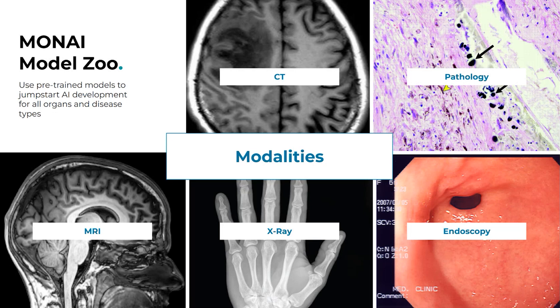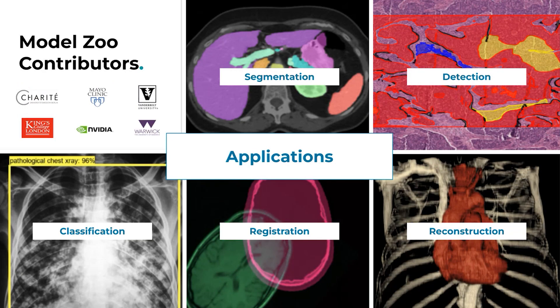The Model Zoo is where you can get jumpstarted with pre-trained models from the community. We have models around CT, pathology, MRI, X-ray, and endoscopy, with applications covering segmentation, detection, classification, registration, and reconstruction. If you're interested in contributing your own model to the Moni Model Zoo, you can do that — go to the Project Moni organization on GitHub and look for the model-zoo repository. It's a great place to get engaged and contribute your work to help the community.